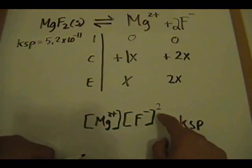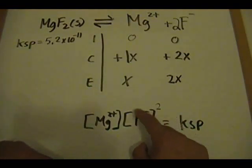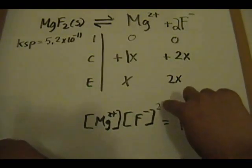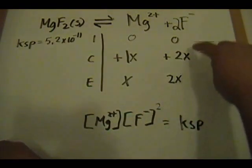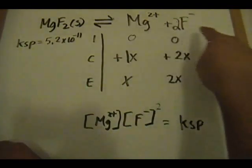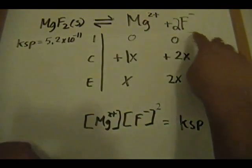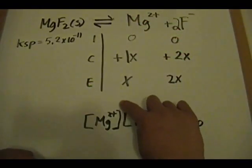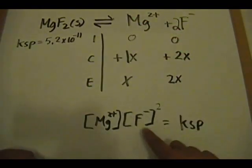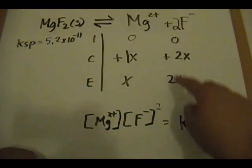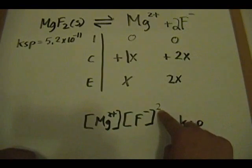We raise each ion's concentration to an exponent equal to its coefficient in the balanced equation. Mg²⁺ has a coefficient of 1, so the exponent is 1. F⁻ has a coefficient of 2, so the exponent is 2: Ksp = [Mg²⁺][F⁻]².